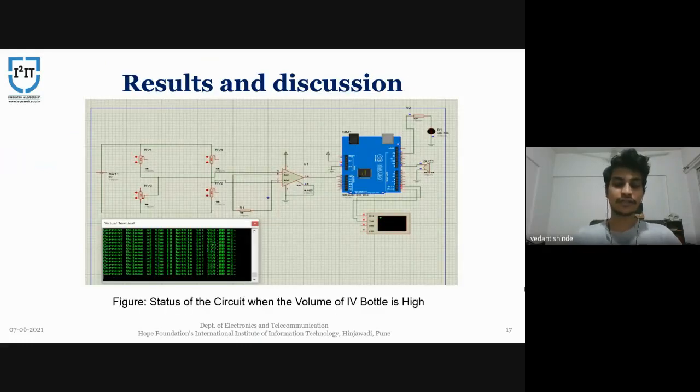So this right here is the status of the circuit when the IV bottle volume is high. As you can see, the current volume is 359 ml. And the LED and the buzzer are off.